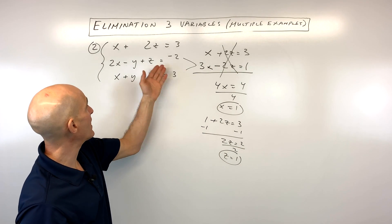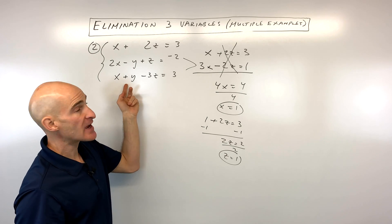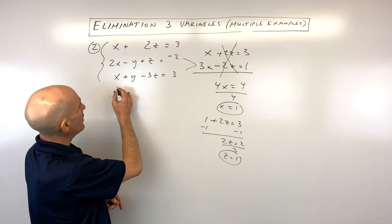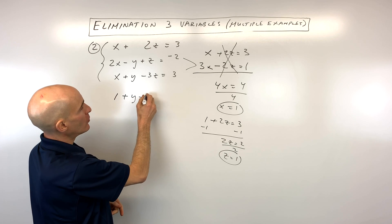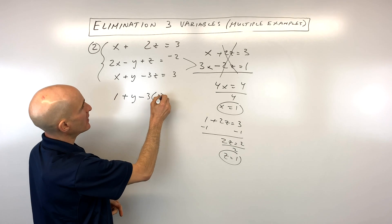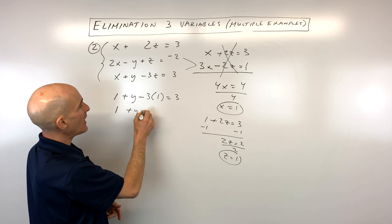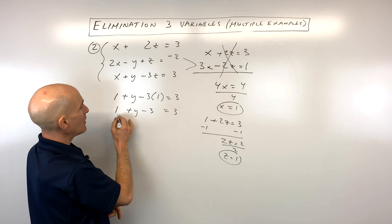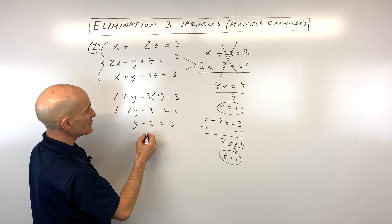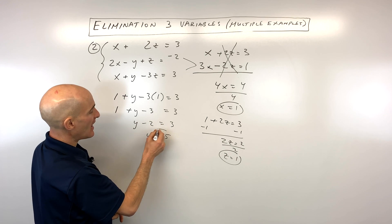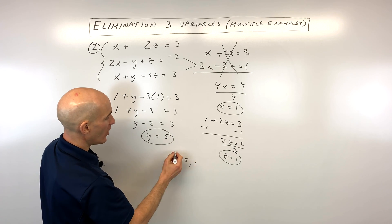We have x and z, so we just need to solve for y. Going back to one of the original equations involving y — I'll use the third one. So x is 1, y is unknown, z is 1: 1 plus y minus 3 equals 3. So 1 plus negative 3 is negative 2, and adding 2 to both sides gives y equals 5. Our solution is 1, 5, 1.